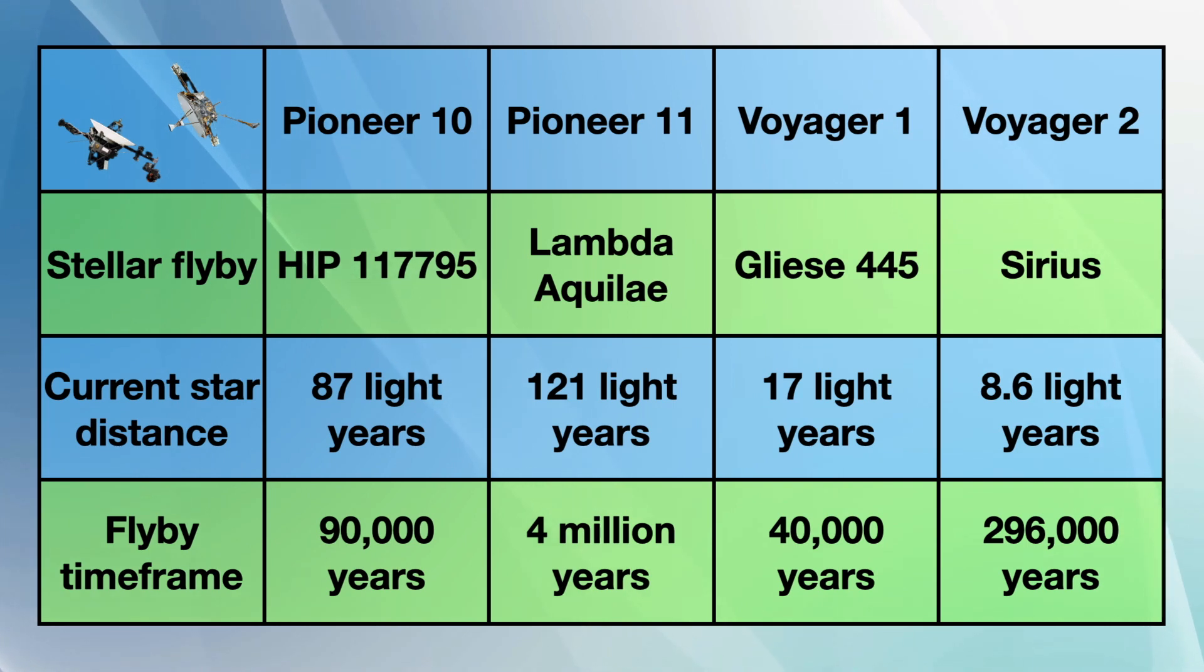Now operating for nearly 50 years, the Voyager spacecraft are heading toward distant stars. Voyager 1 will pass near Gliese 445 in about 40,000 years, and Voyager 2 will approach Sirius, the brightest star in the sky, in about 296,000 years.